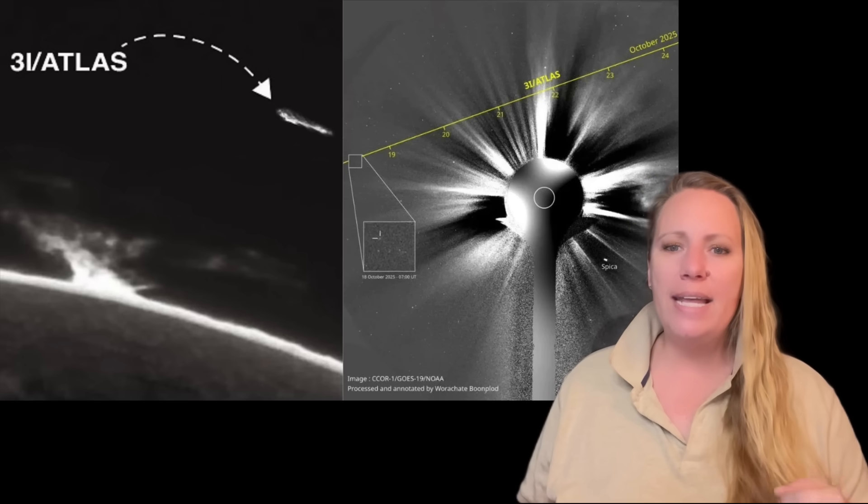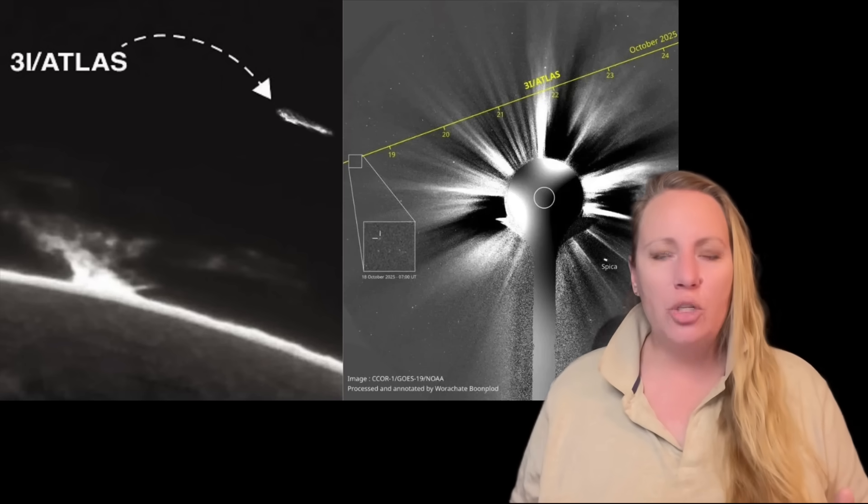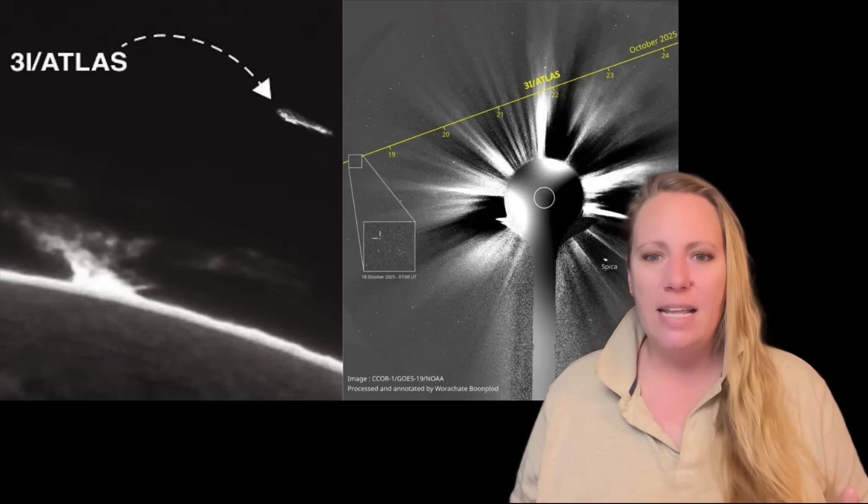Number four, retrograde orbit. Number five, orbit nearly opposite to the ecliptic plane. Number six, close flybys of multiple planets. What are the probability of this? Mars, Earth, and now to Jupiter's hill radius. The probabilities, we've talked about this in my previous videos, again check the playlist, is zero, basically.